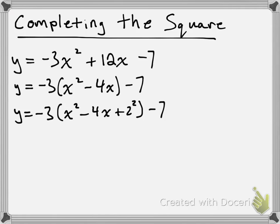Now, you need to remember that this -3 here, that -3 is affecting everything inside of the brackets, including that +2². So I didn't just add in 4. What I really did is I added in 4 × -3. So I just added in -12.